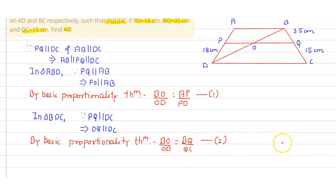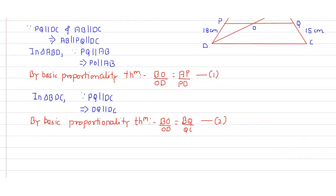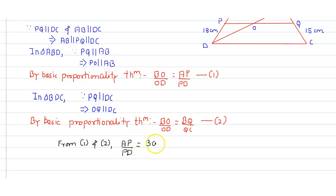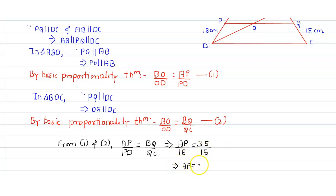From these two equations we can say that AP by PD equals BQ by QC. Now plugging in the known values: AP is unknown, PD is 18, BQ is 35, and QC is 15. So AP equals 18 into 35 by 15.